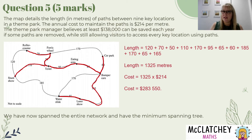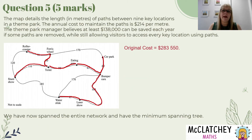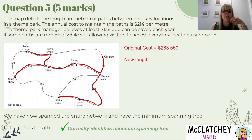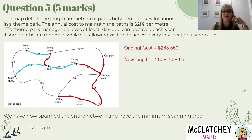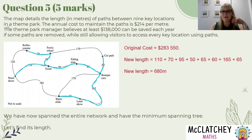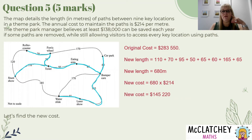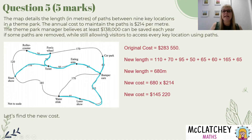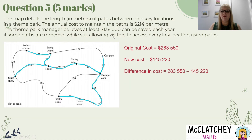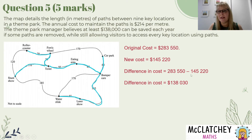The next step is to work out the cost of maintaining this minimum spanning tree. I need to find its length first. The new length is 110 + 70 + 95 + 50 + 65 + 165 + 65 = 620 metres, giving a new cost of 680 × $214 = $145,220. I've got original cost and new cost, so I work out the difference: $283,550 minus $145,220 gives $138,030. The manager is correct because this number is at least $138,000 — it's $30 more.